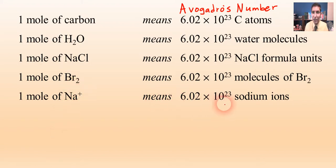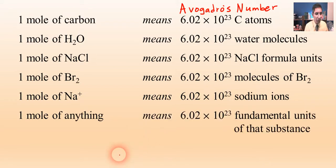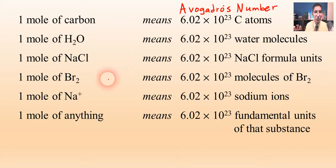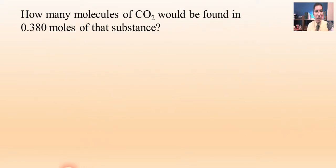So for sodium ions, one mole means that many sodium ions. One mole of anything is 6.02 times 10 to the 23rd fundamental units of that substance. If it's a monatomic element, that's that number of atoms. If it's a covalent compound, it's that many molecules. Now let's use this to do some conversion.